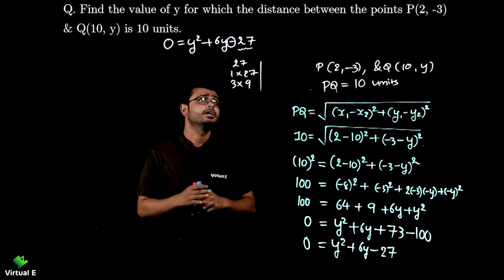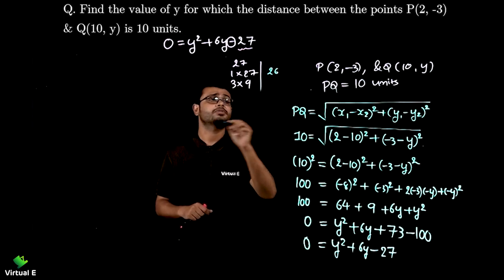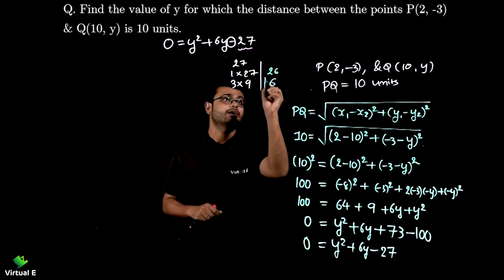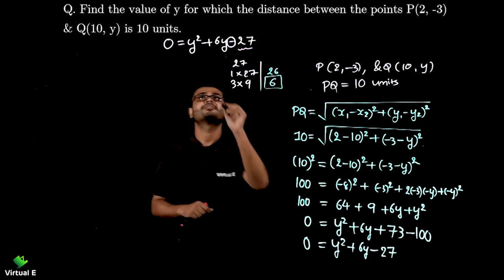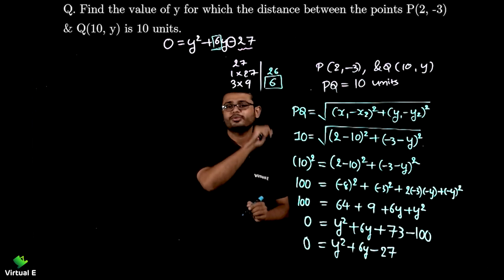So if you subtract the factors. Here 27 - 1 is 26. 9 - 3 is 6. Now this 6 is very interesting number because 6 is during middle term as well. So what are my factors? 3 into 9.